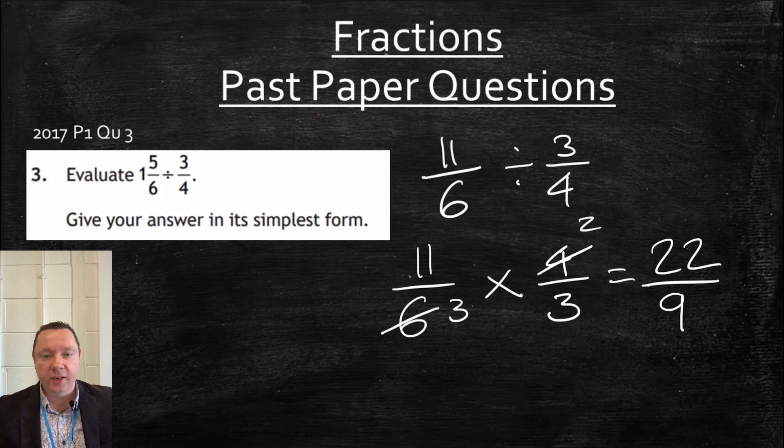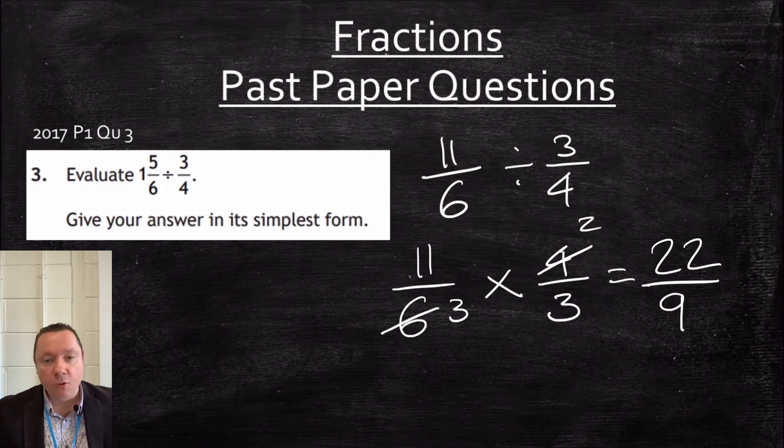Just double check. There's no more simplification. There is not. At this stage, I can leave my answer like that. I do not have to change it back to a mixed number. So that's fine. If I did change it back to a mixed number, I would get two and four ninths.